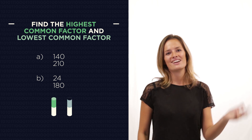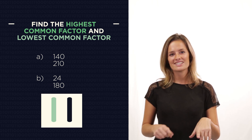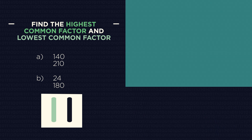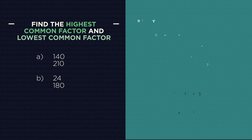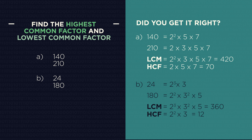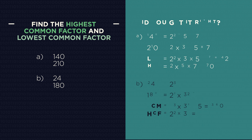Pause the video, find the highest common factor and lowest common multiple, and click play when you're ready. Did you get them right? There you have the wonderful world of prime factors to find the HCF and the LCM — it's much faster than having to write out all the factors or a long list of multiples, so it's a good skill to put to memory.